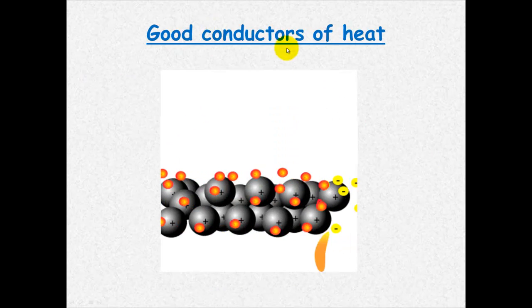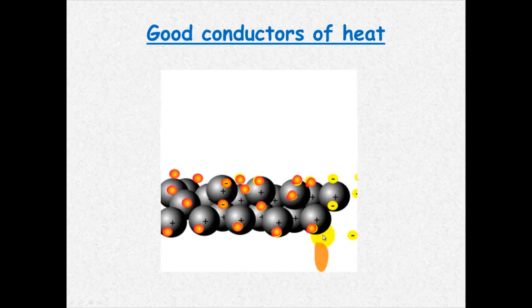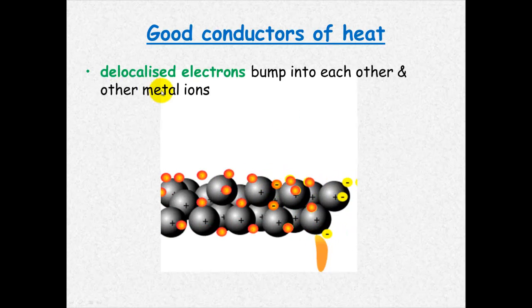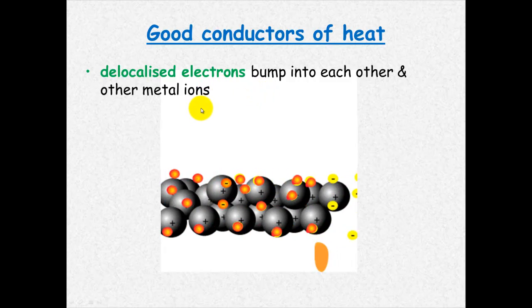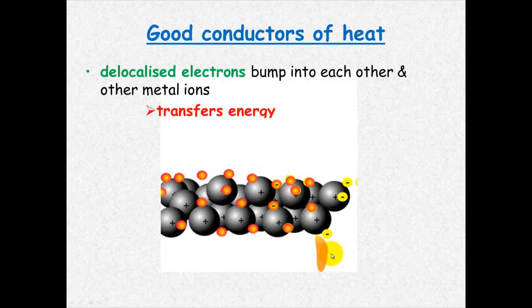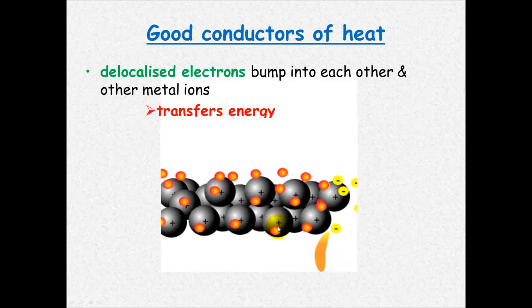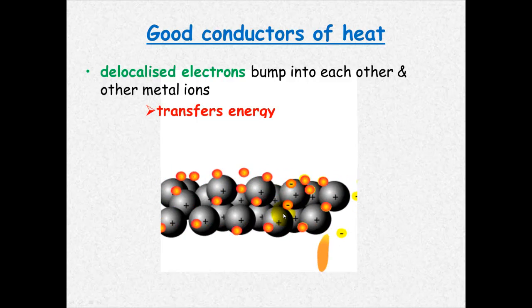They're good conductors of heat and here what happens is if we apply some heat energy, the electrons will bump into the cations and also bump into the other electrons and can transfer that energy across. So the delocalized electrons are able to carry that energy and bump into other metal ions and this just transfers the energy because remember that heat is just energy. If one of these gets energy it will move faster and will move on to giving some of that energy to the next cation or to the next electron and make that one move faster.